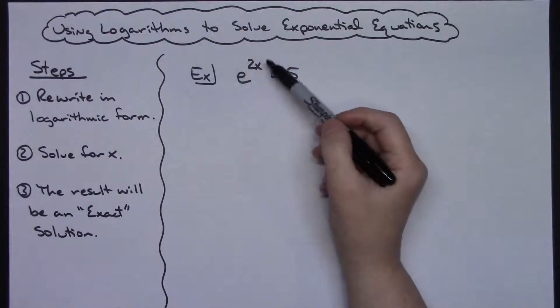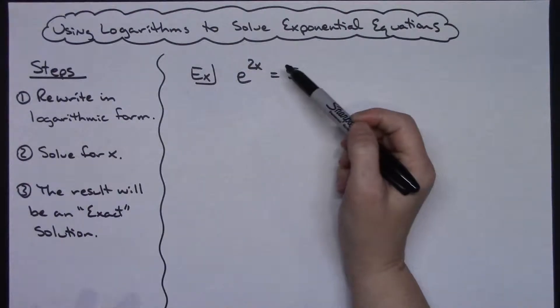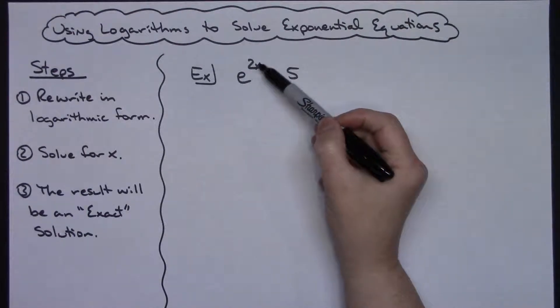So I've got e raised to the 2x equals 5. Nice simple exponential equation I'm trying to solve for that x right there.